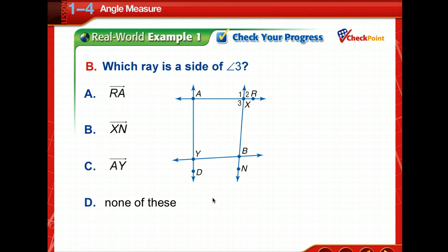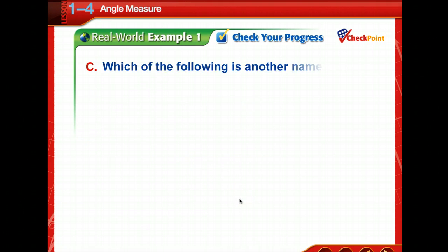Which ray is a side of angle 3? So pause for a moment and study your options, and then come back and see that your answer is correct. Okay, which ray is a side of angle 3? So it has two sides, and it could be XN or XA. And the only choice they give us here for an option is XN. Good job.